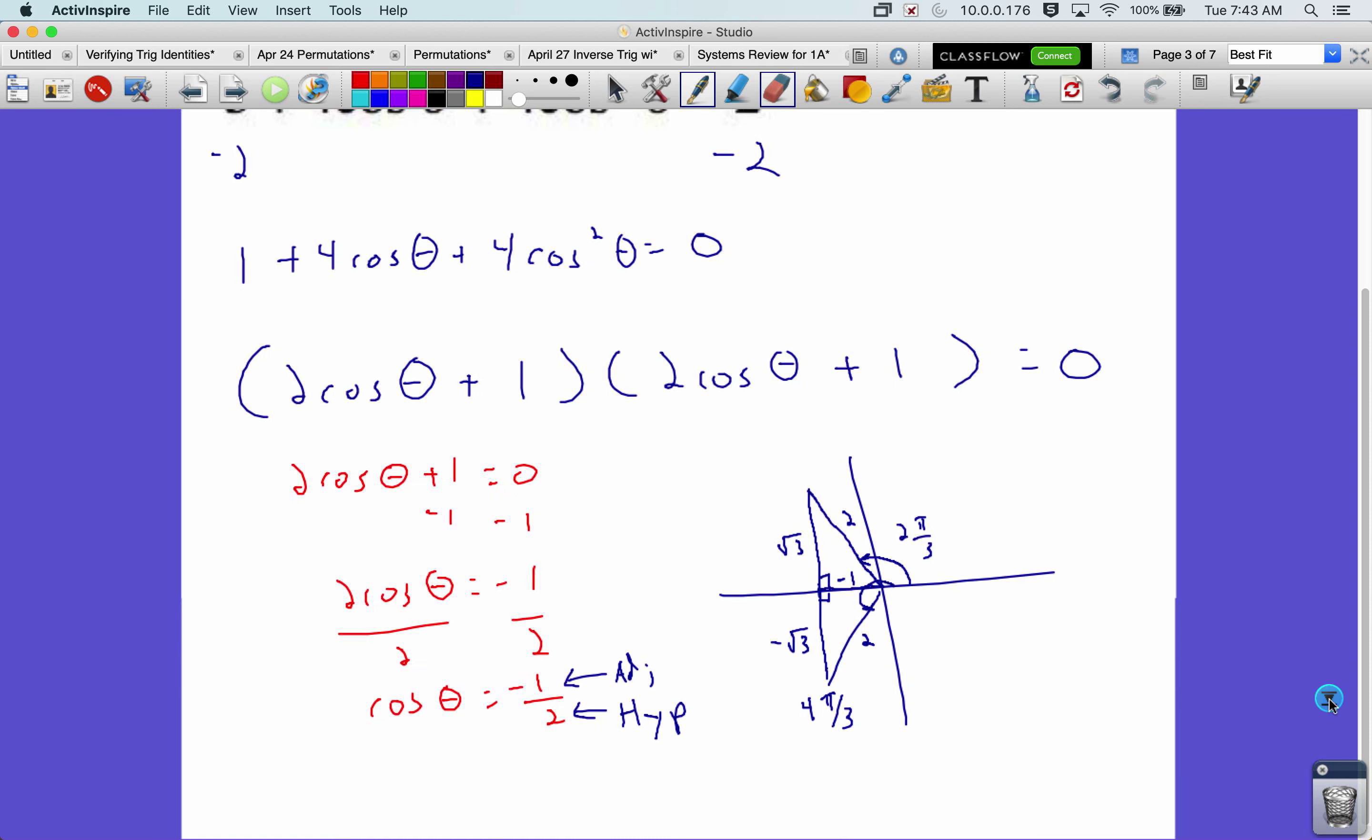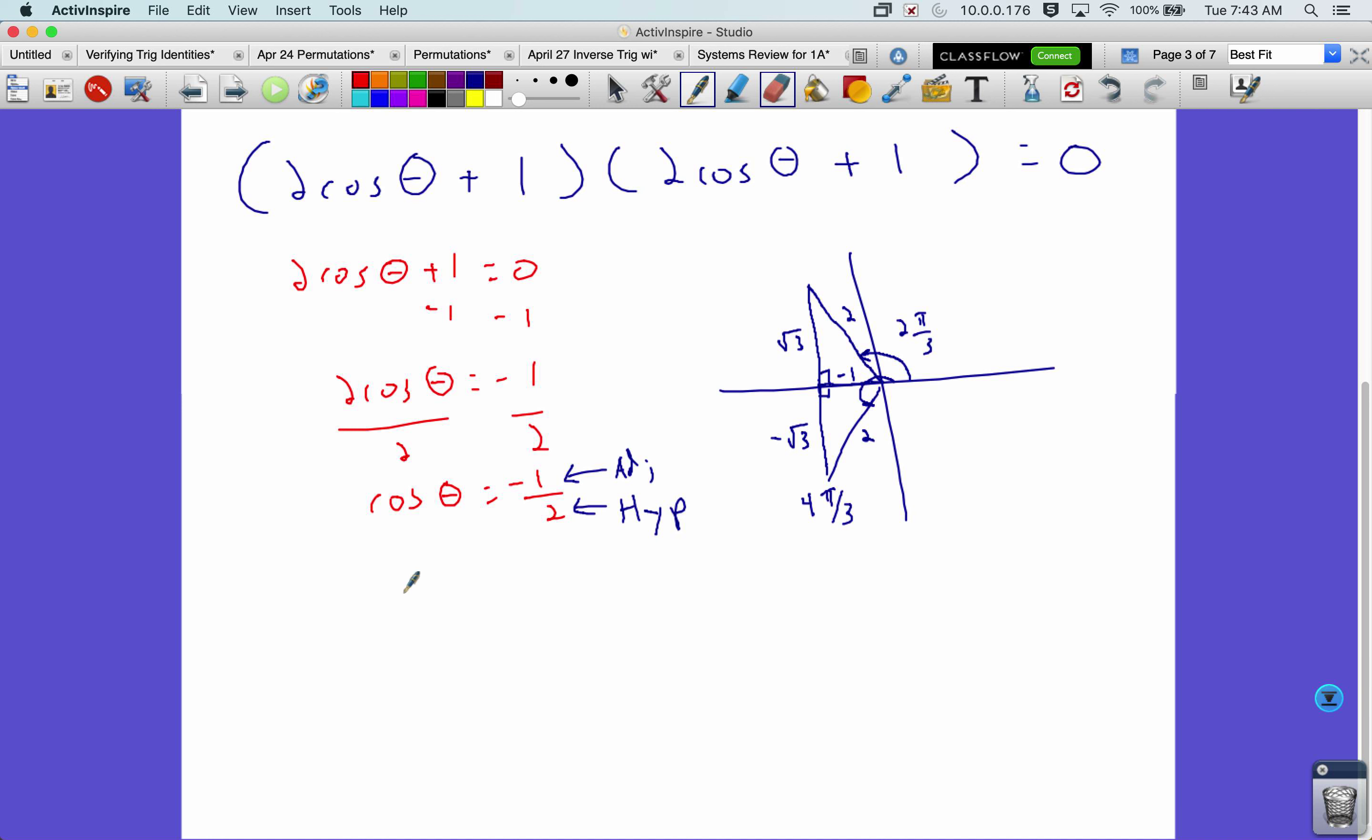All right, now let's be sure we write our answer the right way. So theta here can be equal to either two pi over three or four pi over three. And both of those, we can get back to that terminal side by adding multiples of two pi n. So this plus two pi n is something you can put at the end of almost any problem except for tangent where it's just plus pi n and you only have one answer.